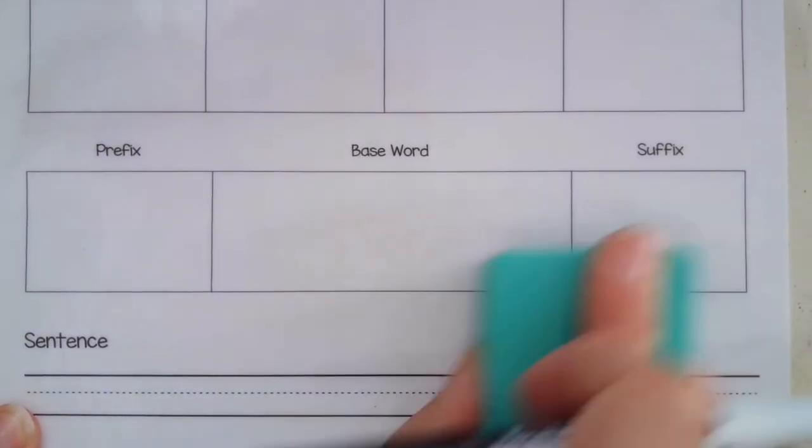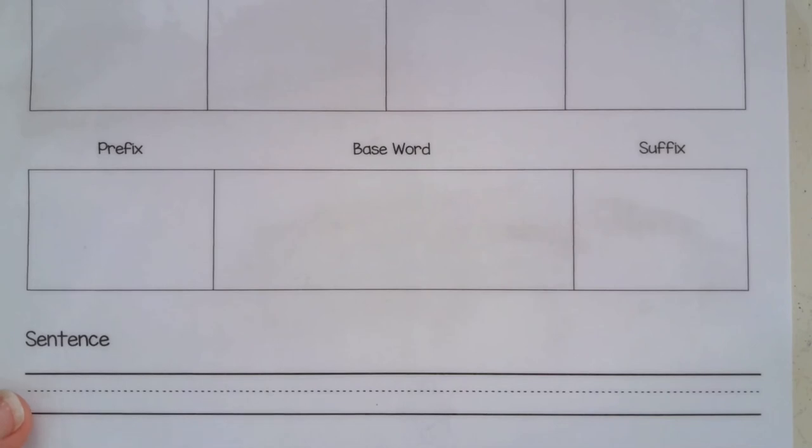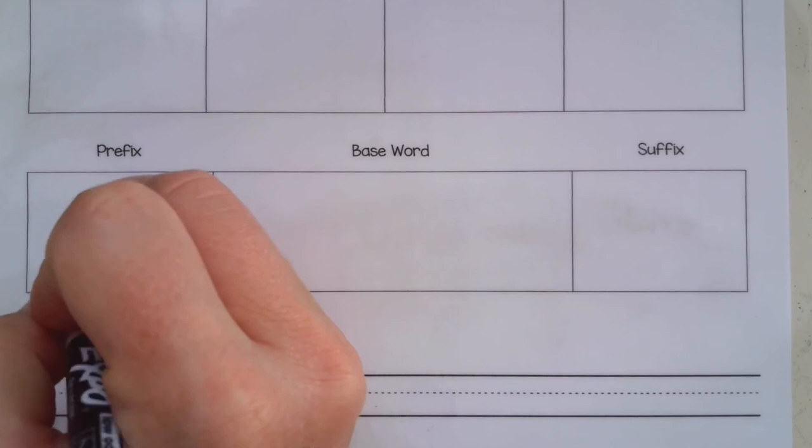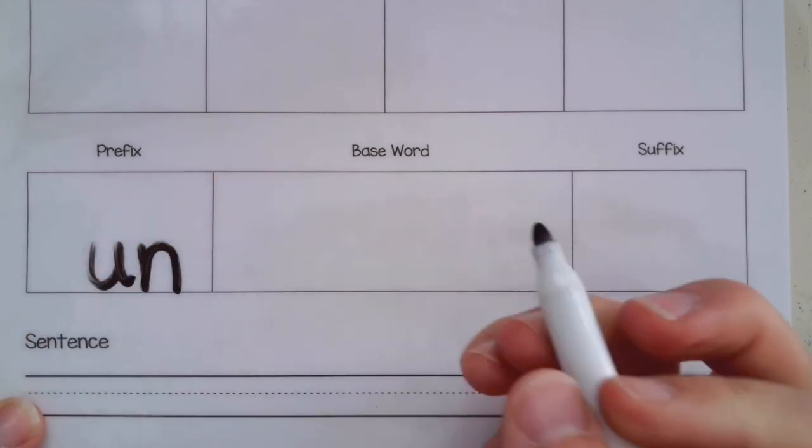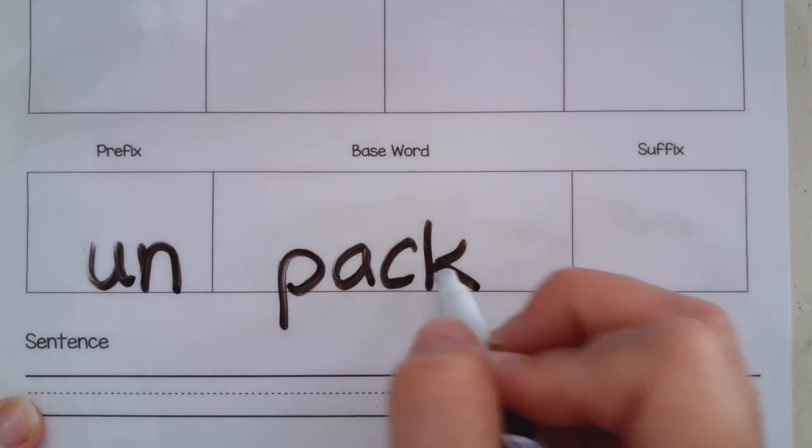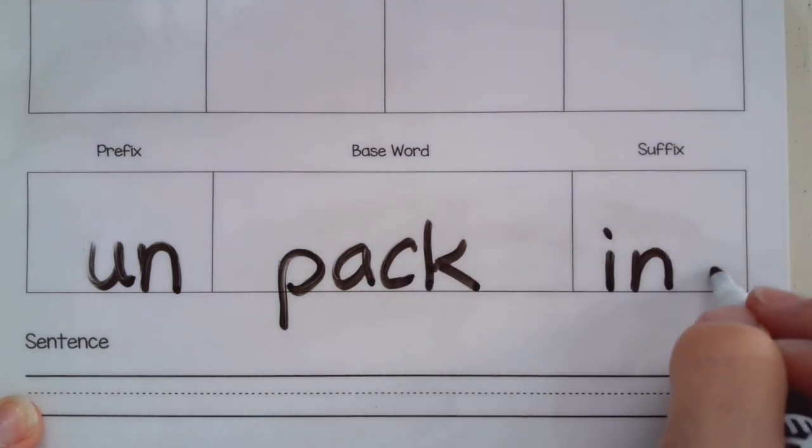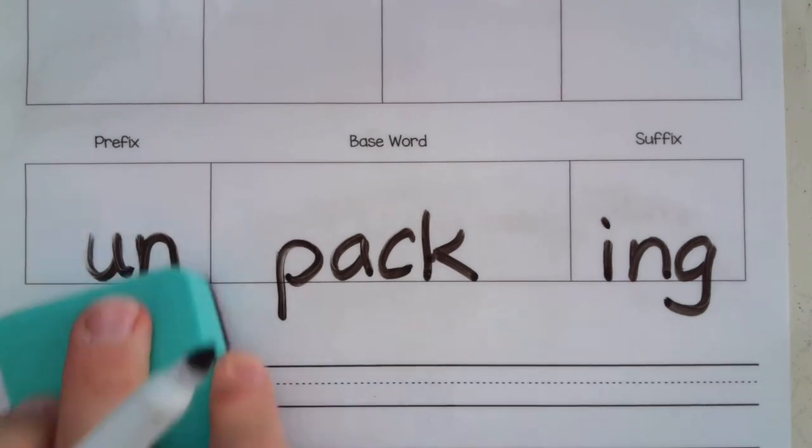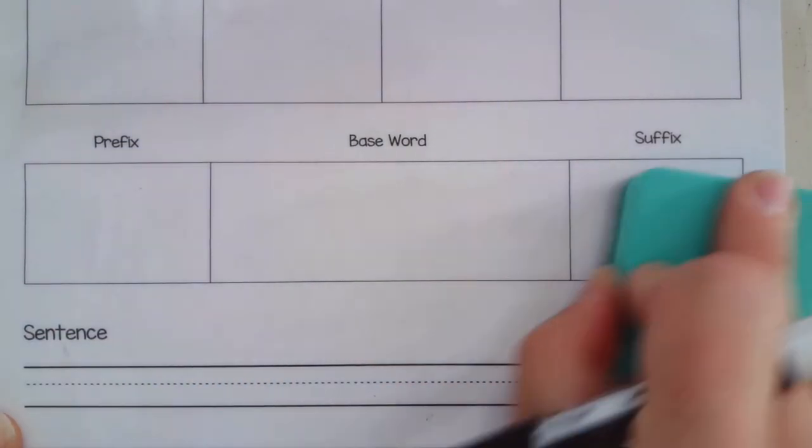And then if we wanted to do a word that contained a prefix, a base word, and a suffix, for instance the word unpacking, the student would break it down. Well what's the prefix? The prefix is un, the base word is pack, and the suffix is ing. Unpacking. And then they just erase. Un-pack-ing.